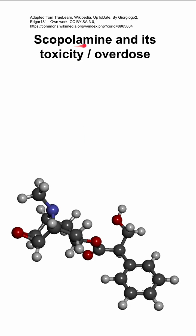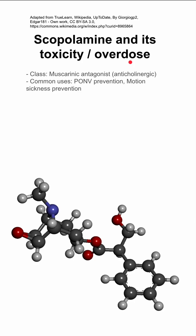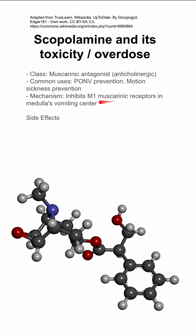Here are some notes on scopolamine, its toxicity, and overdose management. Scopolamine is a muscarinic antagonist and an anticholinergic medication commonly used for post-operative nausea and vomiting prevention and prevention of motion sickness. Its mechanism is that it inhibits the M1 muscarinic receptors in the medulla's vomiting center.